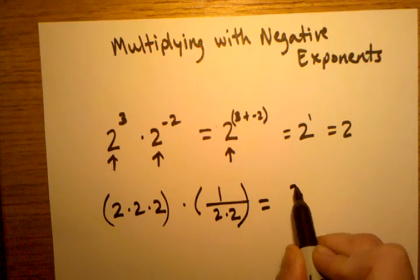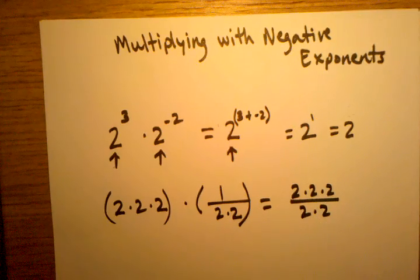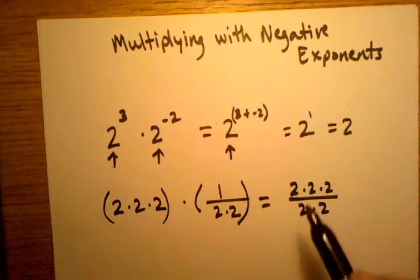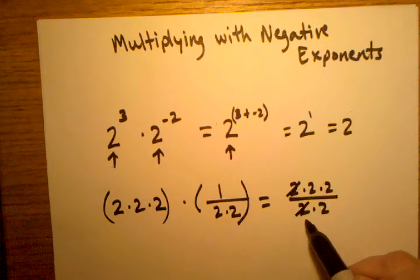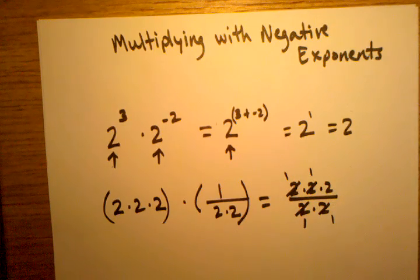If we combine that by multiplying these fractions, we'll end up with 2 times 2 times 2 over 2 times 2. And now we can start eliminating and crossing out the same numbers in the denominator and numerator,